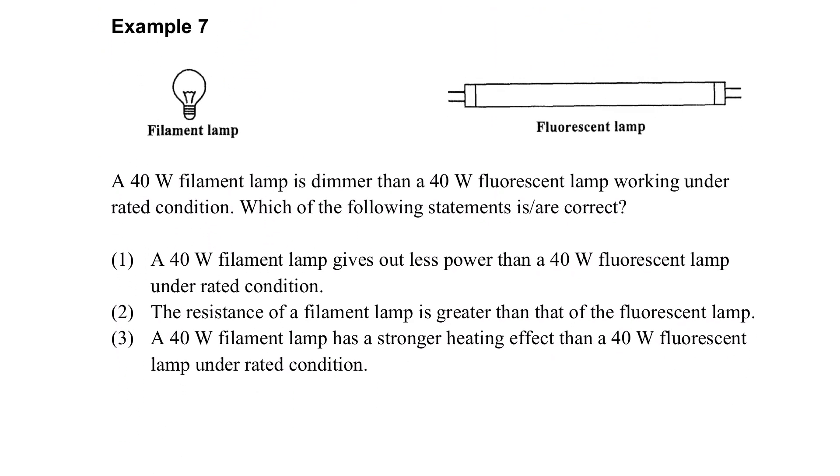Let's take a look at an example here. We have a filament lamp and a fluorescent lamp that work with the same power, but the filament lamp is dimmer. Does the filament lamp give out less power? It does not, because at rated condition they have the same power. That means they give out the same amount of power.